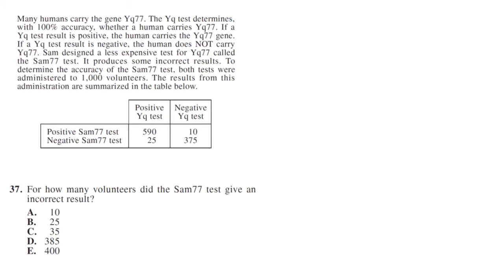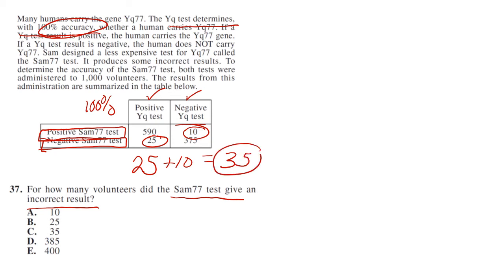How many volunteers did the Sam77 test give an incorrect result for? We know that the YQ test determines with 100% accuracy, so everything here is definitely positive and everything in this column is definitely negative. But these 25 here were given a negative result from Sam77 even though we know they're positive because this has 100% accuracy. So 25 were wrong. Everyone in this column, the negative YQ test, were negative, but these 10 were given a positive Sam77 result. So 10 of those were wrong. 25 plus 10 is 35. This is a difficult reading question. So the answer is C.